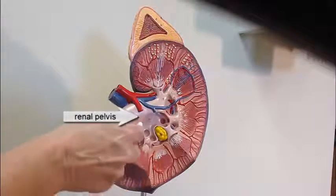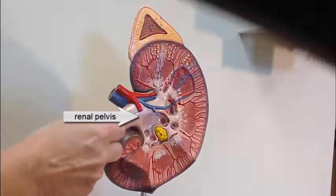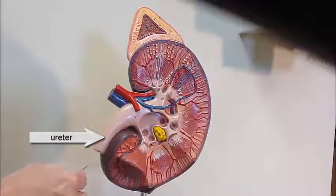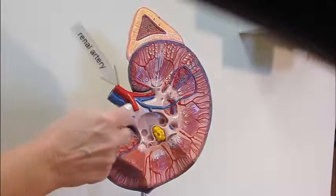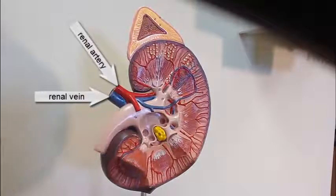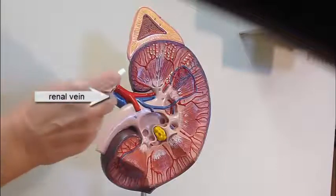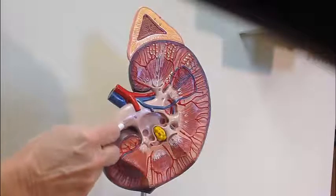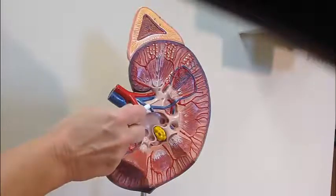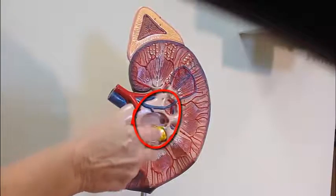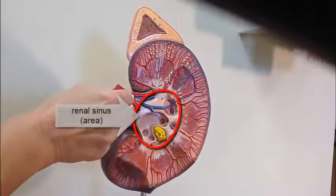The major calyces combine to form the renal pelvis, and the renal pelvis then goes on into the ureter, exiting the kidney. We can also see the renal artery and the renal vein entering with the blood supply. The renal artery, renal vein, and the renal pelvis with major and minor calyces are embedded within the renal sinus — the location within the kidney.